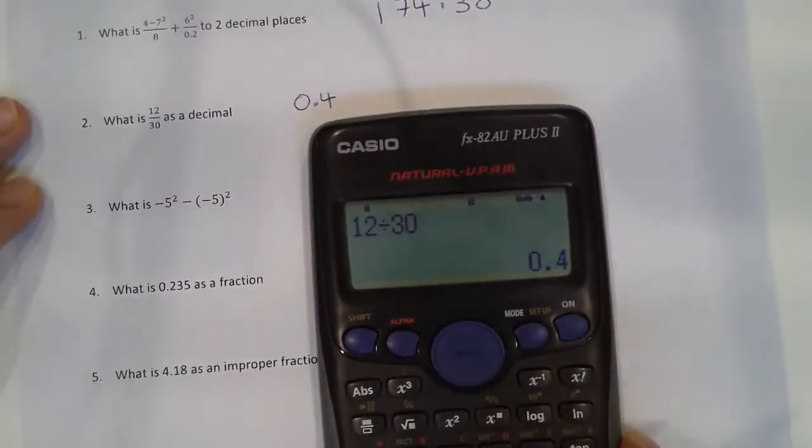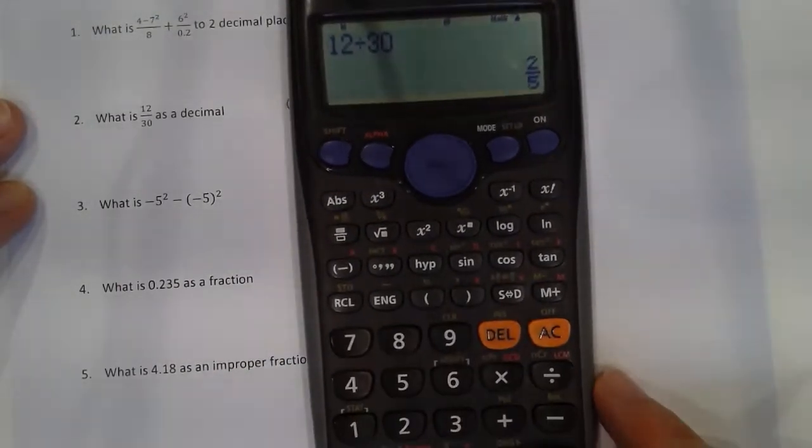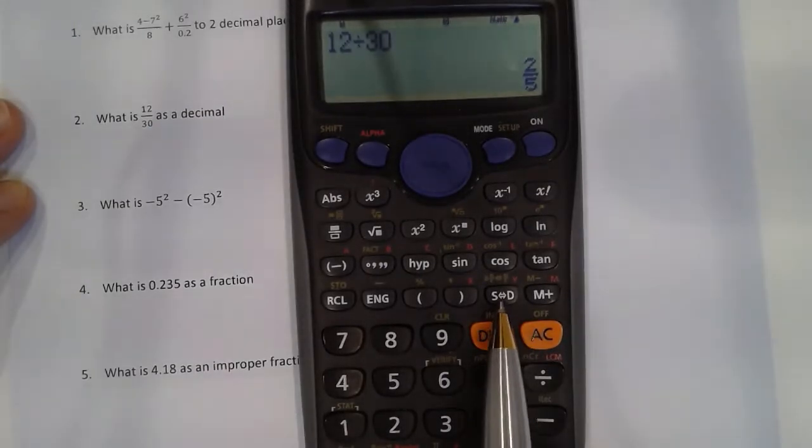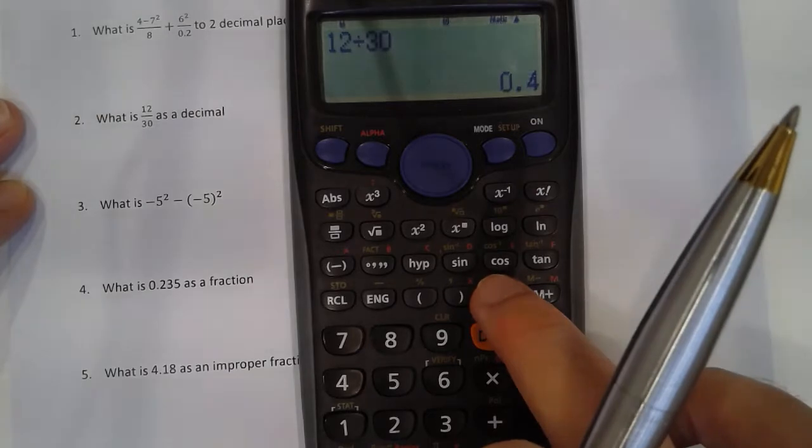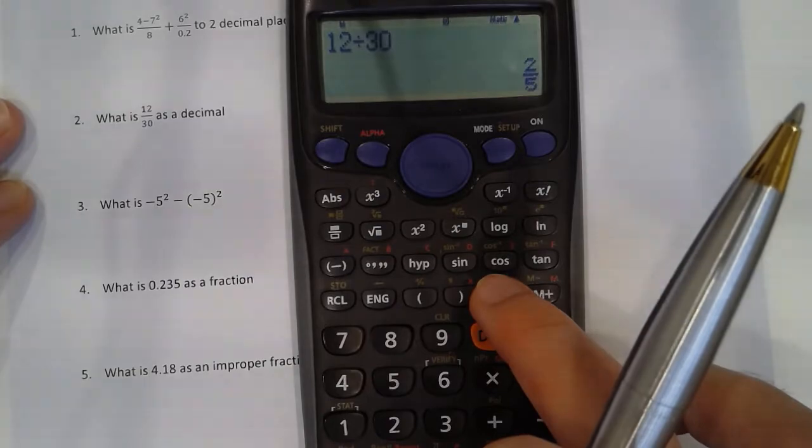Now some calculators will keep it as a fraction. So it will look like 2 over 5. Now the most important button on the calculator is this one here, SD. And what that does is that converts fractions to decimal. You can see every time I press it, it's just changing a fraction to a decimal. So very, very useful.